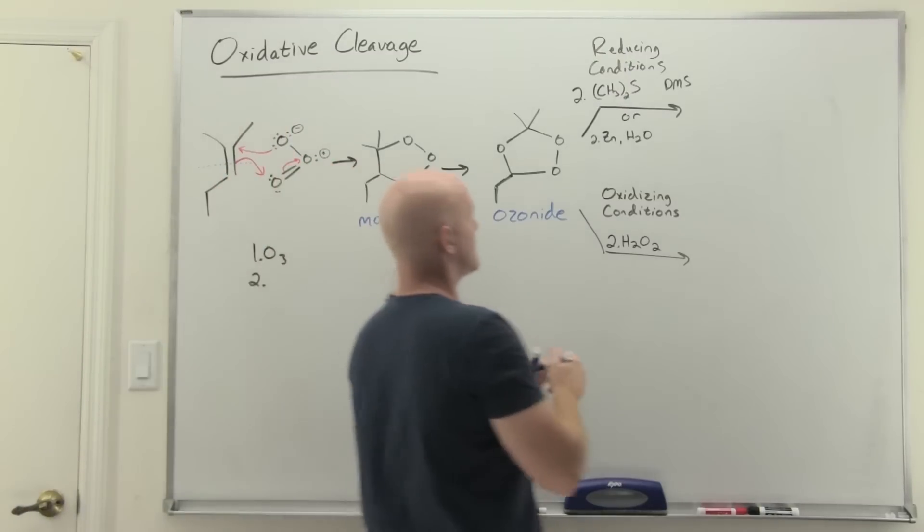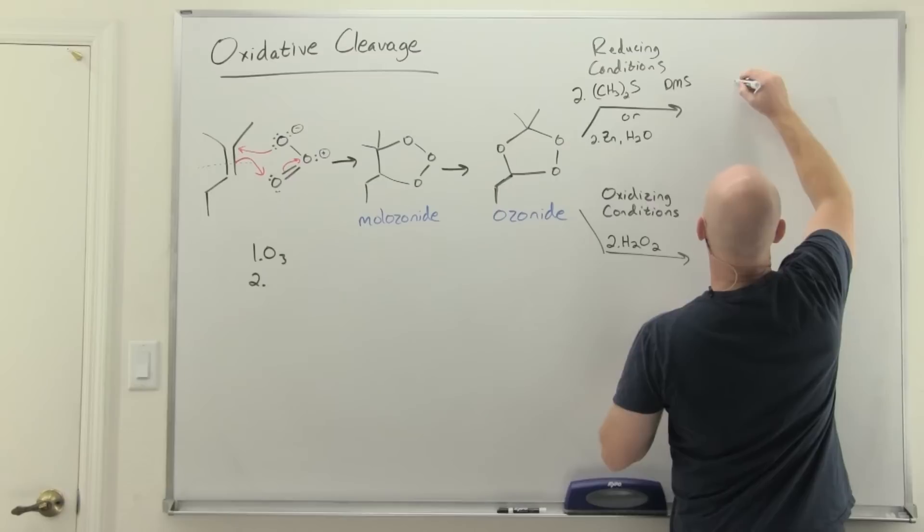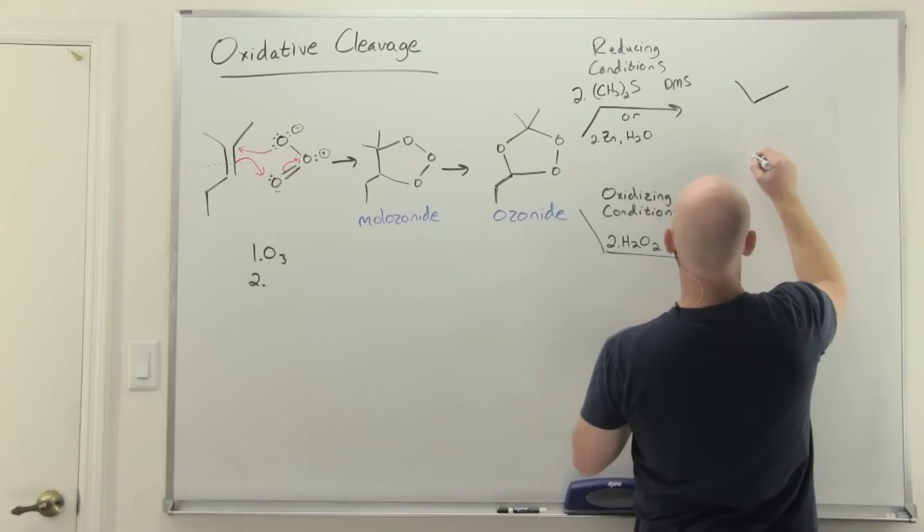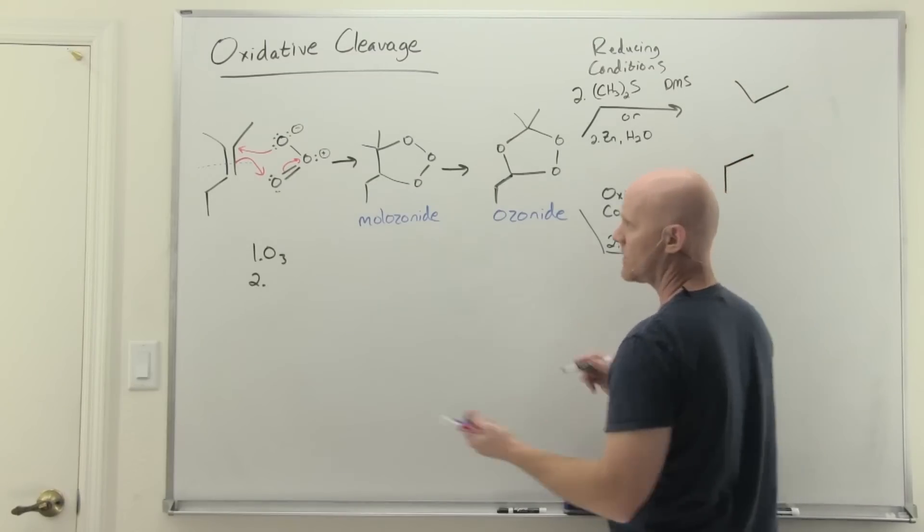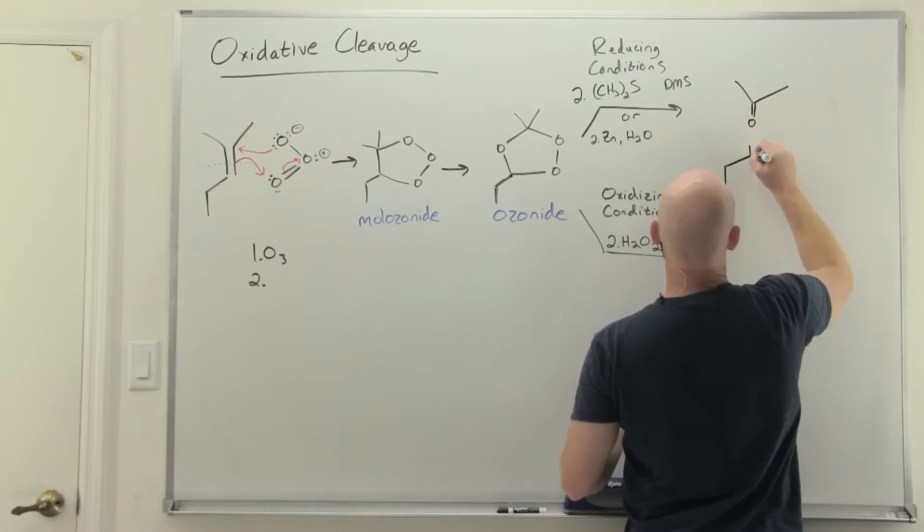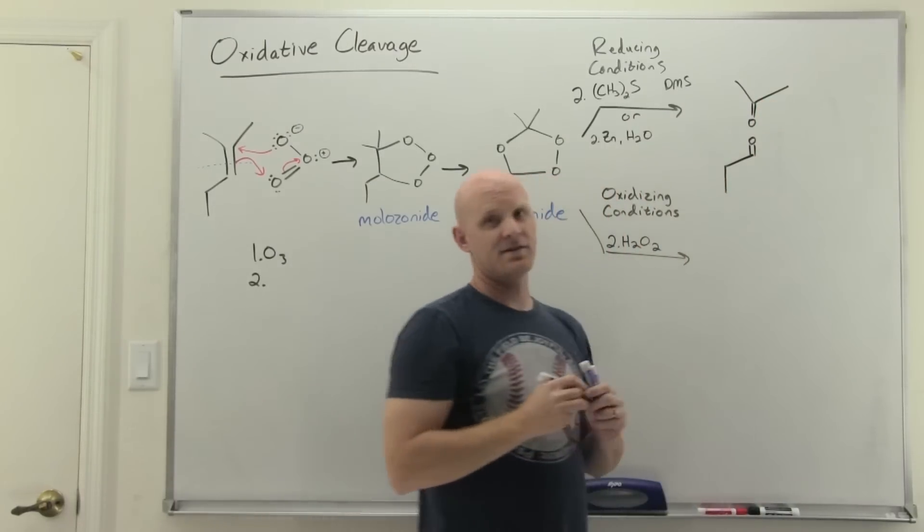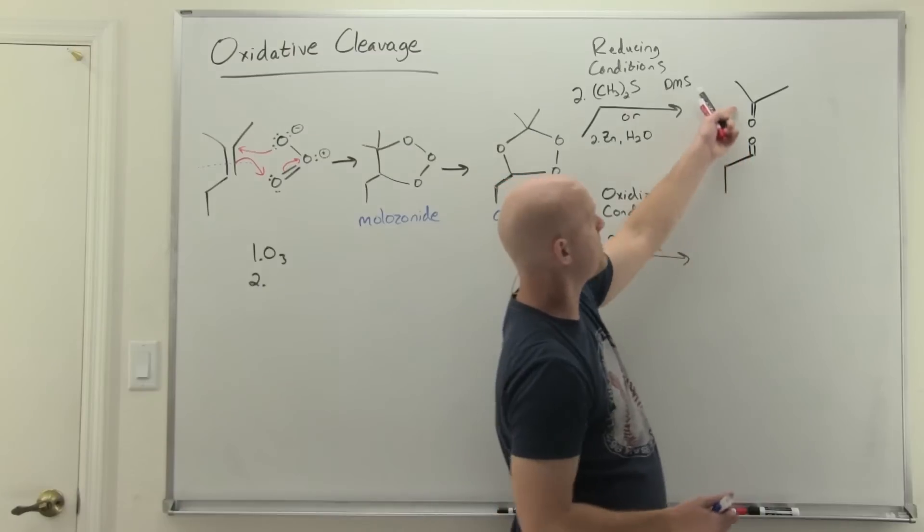I'll cleave it in half and then I will oxidize both sides to make it oxidative cleavage. So cleave both sides and then oxidize both sides - that means give a double bond to oxygen to both sides.